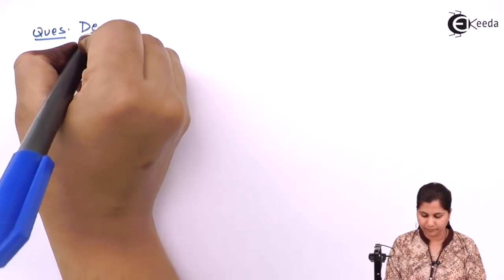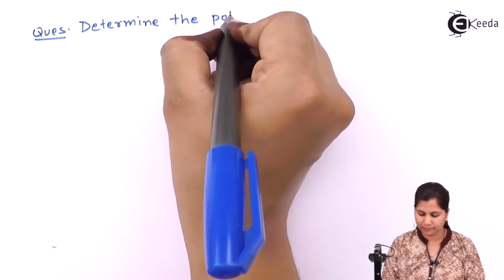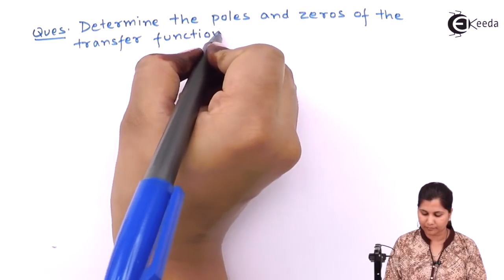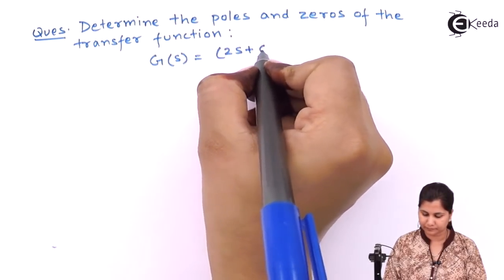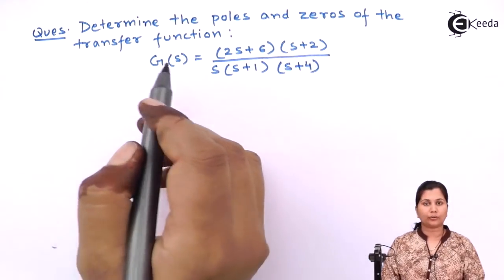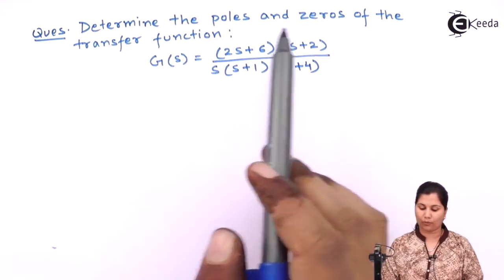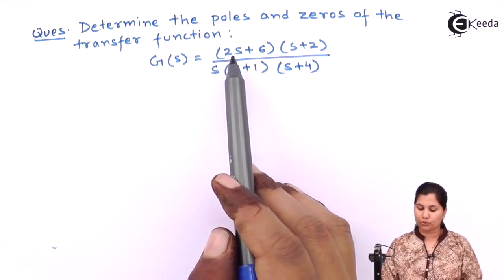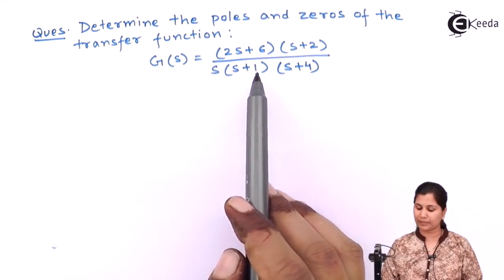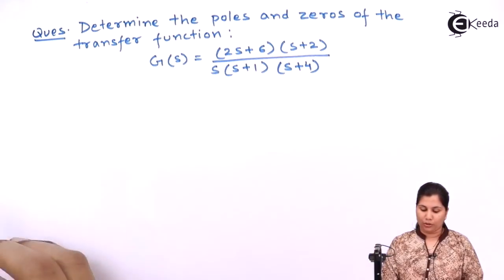Hello friends, in this video we are going to solve a problem on finding the poles and zeros of a transfer function. This is our question: we have to determine the poles and zeros of the transfer function given by (2s + 6)(s + 2) divided by s(s + 1)(s + 4). Let's solve this question.